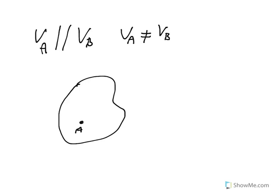Let's say this is A, this is B. Velocity of A is like this, but velocity of B is in the other direction. They are not necessarily equal to one another, but they are parallel.